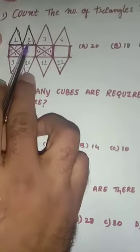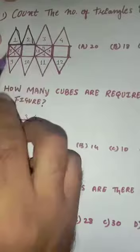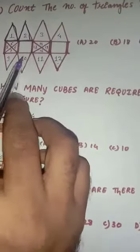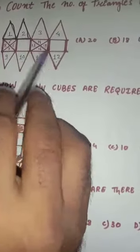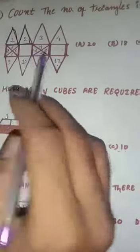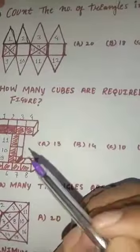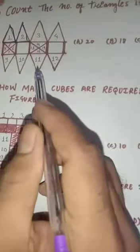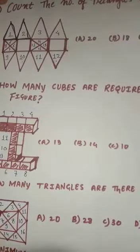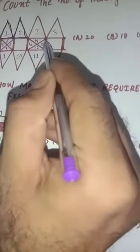We can easily find 1, 2, 3, 4, 5, 6, 7, 8, 9, 10, 11, 12, 13, 14, 15, and 16. These 16 triangles we can easily find out. But there are some more triangles which are hidden and we can't find them easily.